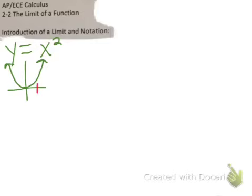Here's x = 1. From the right side, if I start up here and get closer and closer, as x approaches 1 coming down the graph, what is my y value? From the left side, as I get closer and closer to 1, what is the y value? We know the y value of this point is 1. So both from the right and from the left, as x approaches 1, the function equals 1.